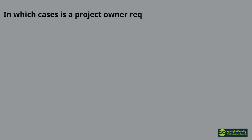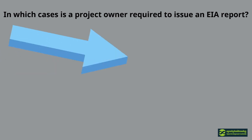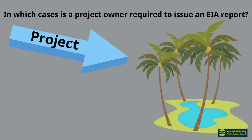In which cases is a project owner required to issue an EIA report? Chapter 3 of the Law on Environmental Protection and Natural Resource Management requires that an environmental impact assessment be conducted for projects likely to have an impact on the environment, whether they are public or privately funded. A sub-decree specifies these cases by listing fields where an EIA is necessary.